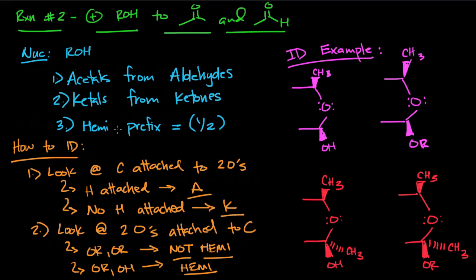So the first thing we're going to do after going over that terminology is go over how to ID whether or not you're looking at an acetal, a ketal, hemiacetal, or hemiketal. The first thing you want to look at is the carbon that's attached to the two oxygens, because the carbon attached to the two oxygens is the carbon that was originally present in the carbonyl. If there's an H attached, that's going to be some sort of acetal or hemiacetal.